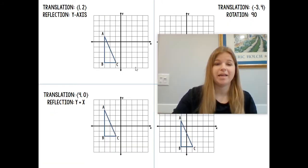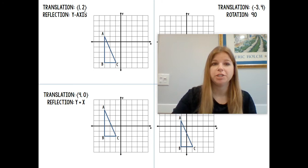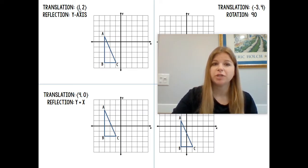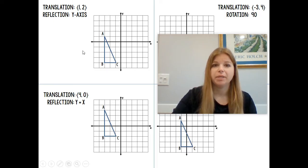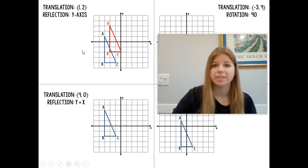Now we've got this new triangle ABC and we're going to do the composition of two transformations: translate it 1, 2 and then do a reflection in the y-axis. A translation of 1, 2 means moving 1 unit to the right and 2 units up. So if I do that transformation, every point moves 1 unit to the right and 2 units up, giving me A prime, B prime, C prime.